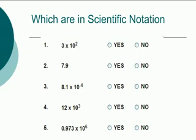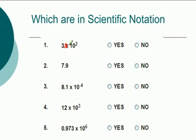Let's figure out which of these are in scientific notation. The first one says 3 times 10 to the second. Now 3 actually has a decimal point — if it's a whole number it has a decimal and a zero. So this could be in scientific notation even though it's not written as a decimal number — it can be. So this is in scientific notation.